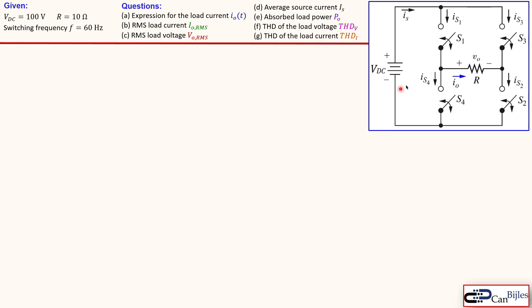So the VDC here, the DC voltage source is 100 volts, the resistor is 10 ohms and we have a switching frequency of 60 hertz. So these switches are switching with a switching frequency of 60 hertz. These are the questions. We have a lot of questions to deal with.